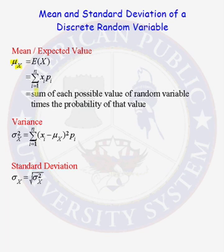In this particular problem, we are saying that there are n different possible values for the random variable, from x1 up to xn. And pi represents the probability that the random variable takes on that particular value. So in words, the expected value or the mean is equal to the sum of each possible value of the random variable times the probability of that value.